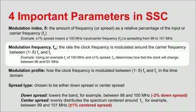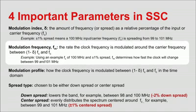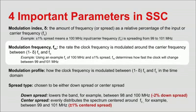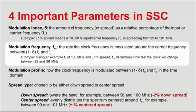The modulation frequency is the rate the clock frequency is modulated around the carrier frequency. Typically, this is selected to be above 30 kilohertz and less than 100 kilohertz in order to avoid interference in audio applications.